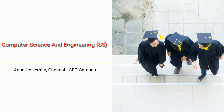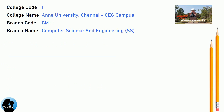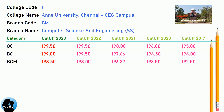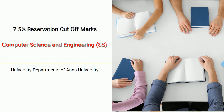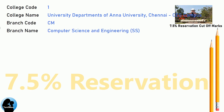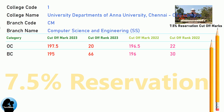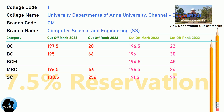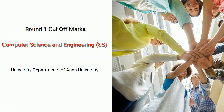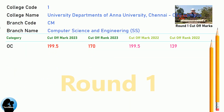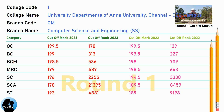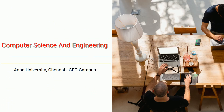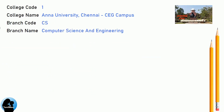Cut-Off for Anna University Chennai CEG Campus in Computer Science and Engineering. DNA 7.5 Reservation Cut-Off for Anna University Chennai CEG Campus in Computer Science and Engineering. DNA Round 1 Cut-Off for Anna University Chennai CEG Campus in Computer Science and Engineering. DNA Cut-Off for Anna University Chennai CEG Campus in Computer Science and Engineering.